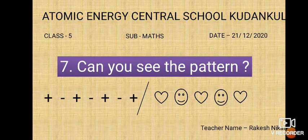And then next comes heart, face, heart, face, heart. So you can see a pattern is there. Alternate signs are there in the first pattern and alternate pictures are there in the second pattern. So this is an alternate pattern.